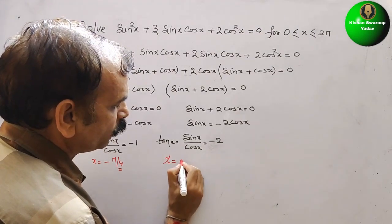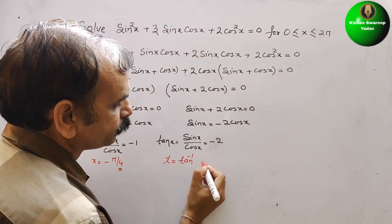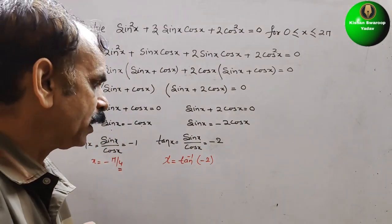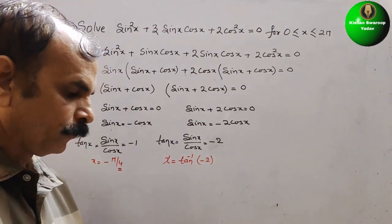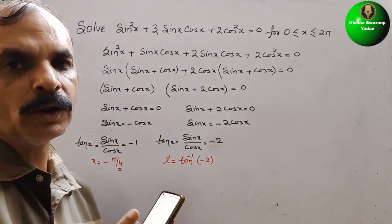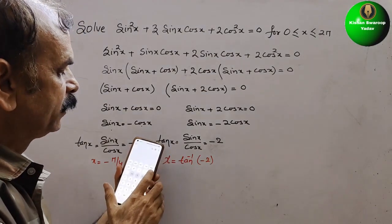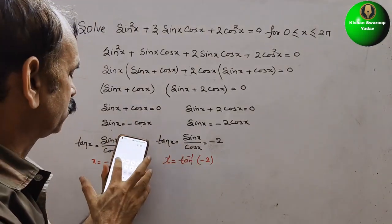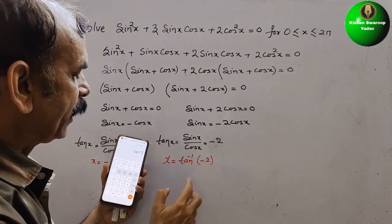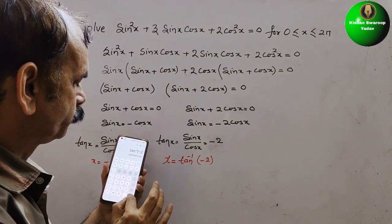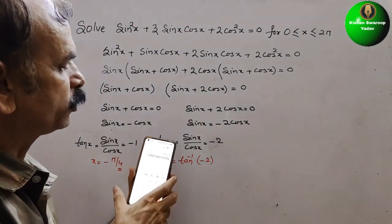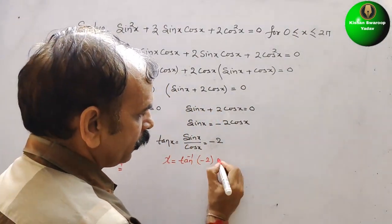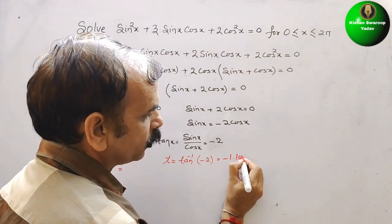For tanx = −2, we need to use a scientific calculator to find tan⁻¹(−2). Set the calculator to radians, press inverse, then tan inverse, and enter −2. The result is approximately −1.107.